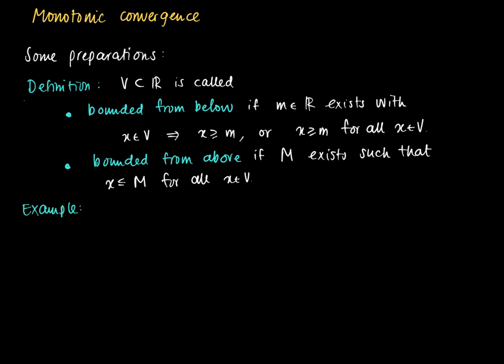So for example if we take V is the interval left closed right open [0,1), this one is bounded from above by 2. We can just take any number larger than the ones in V, so there's no restriction on capital M in this sense.